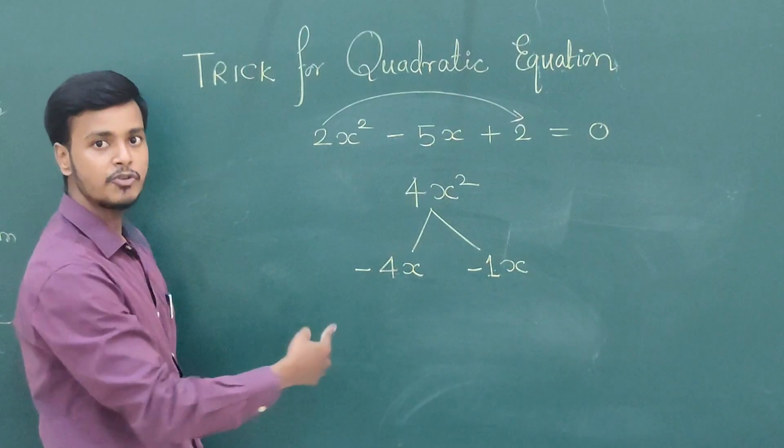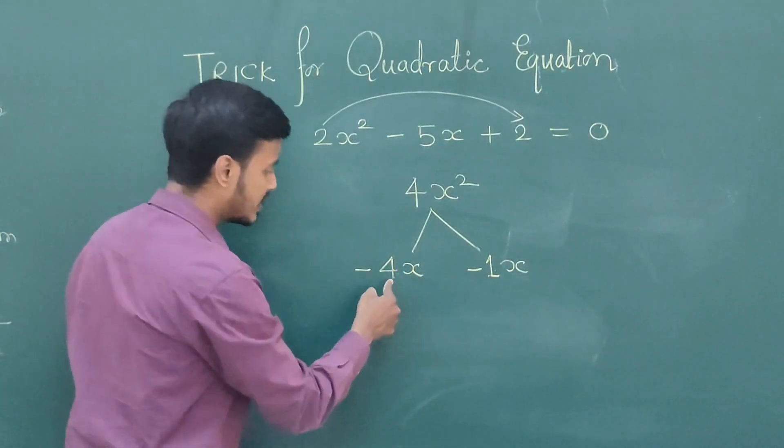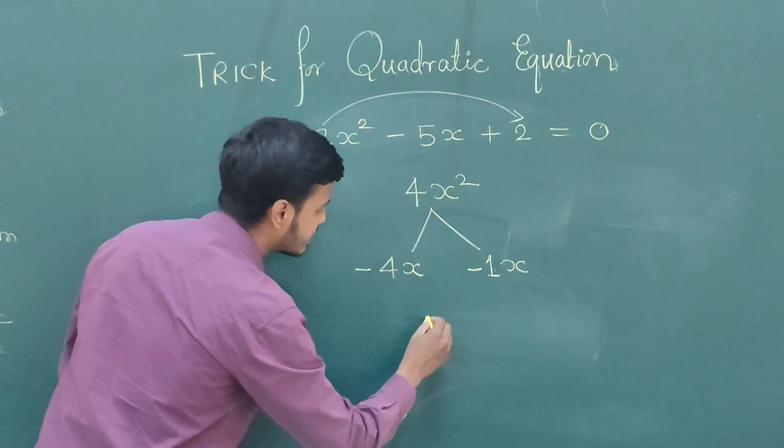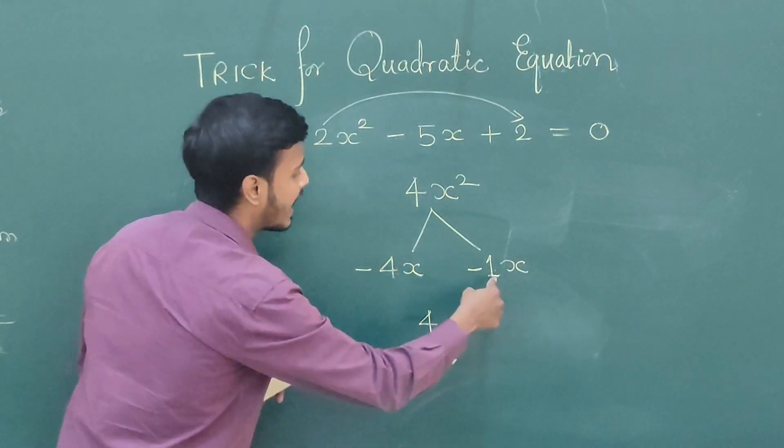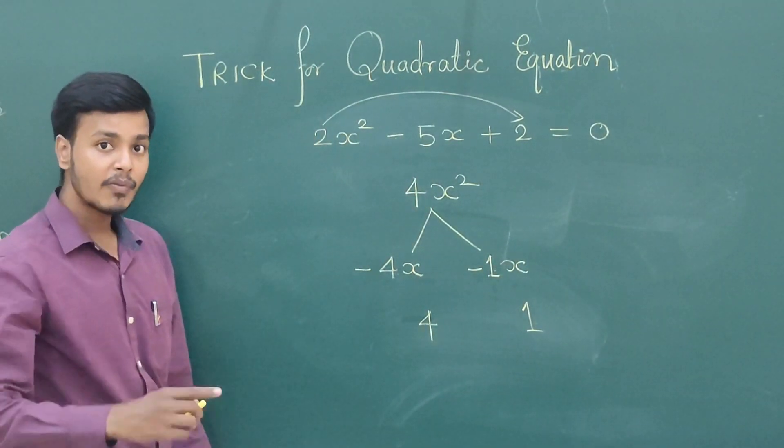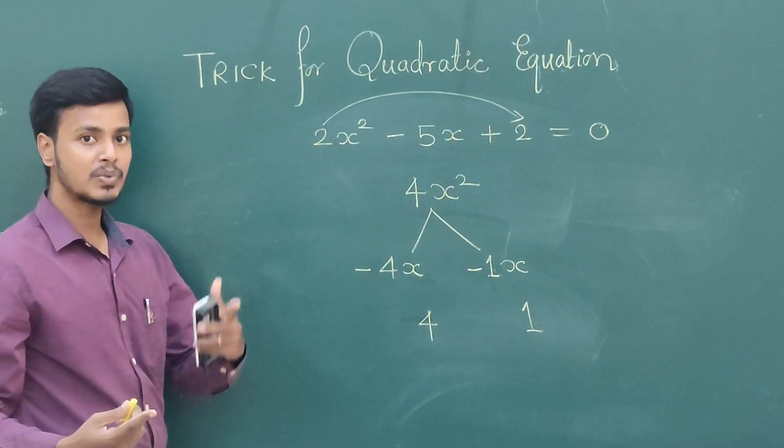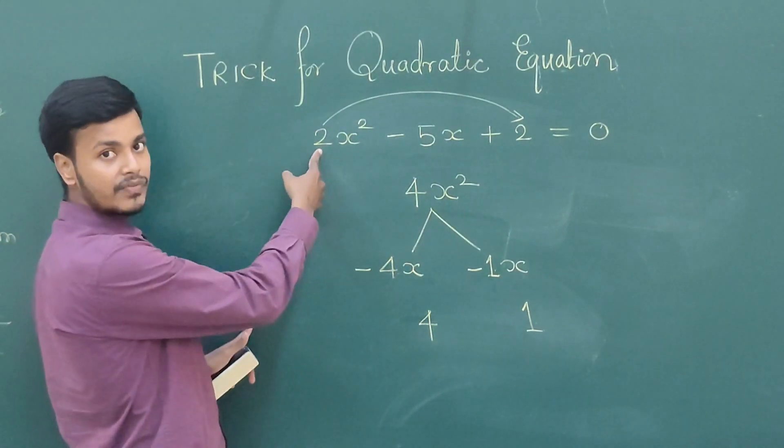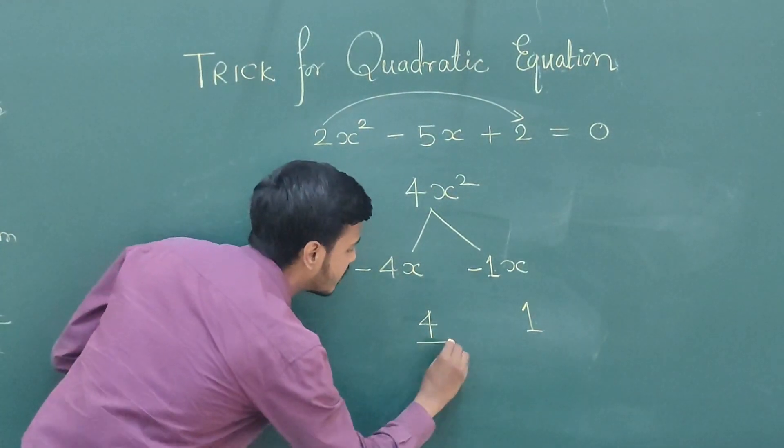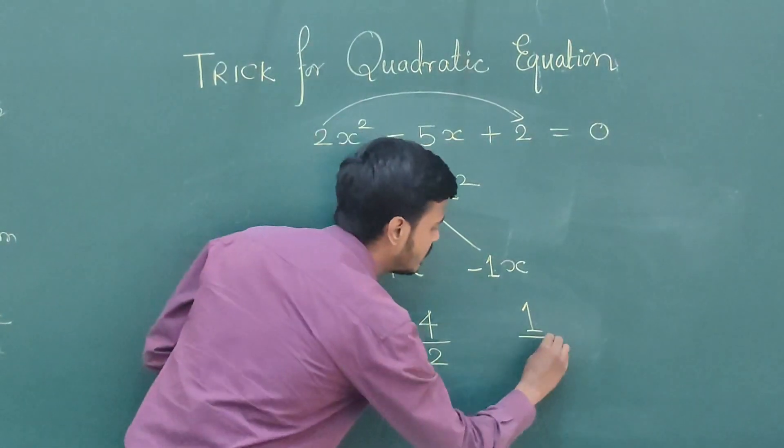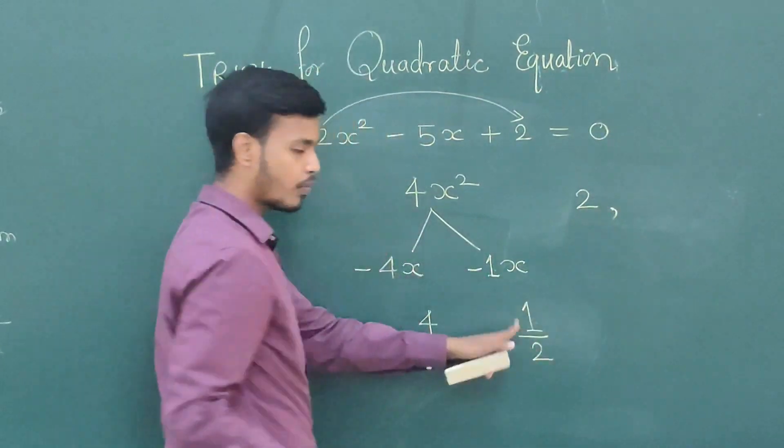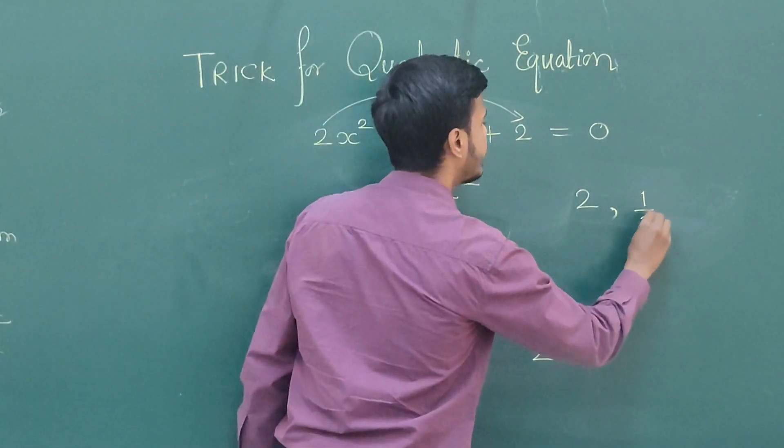Now what does this trick say? Give minus sign to these numbers. So minus 4 into minus is plus 4, and minus 1 into minus is plus 1. Now step 2 says divide by the coefficient of x squared. The coefficient of x squared is 2. So 4 by 2 is 2, and 1 by 2 is 1 by 2.